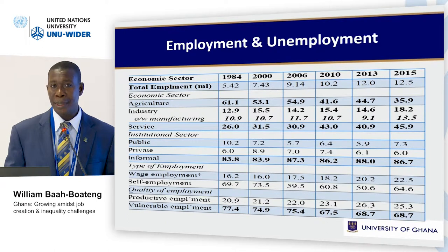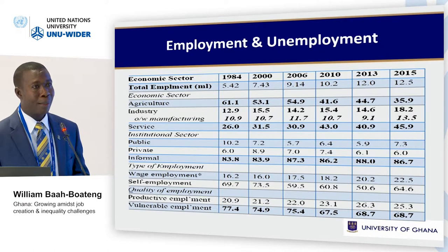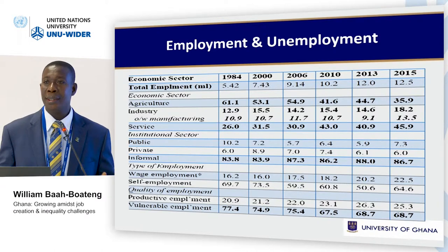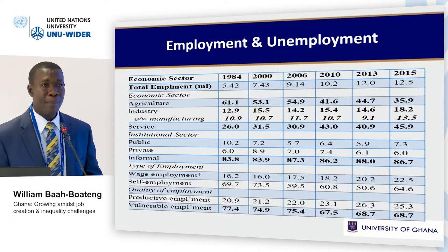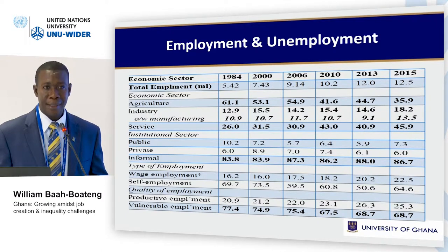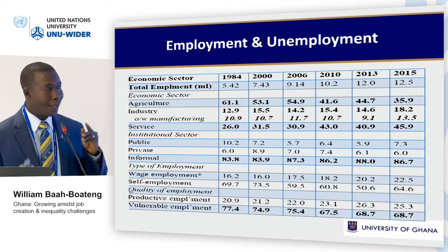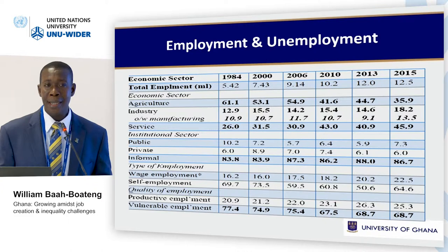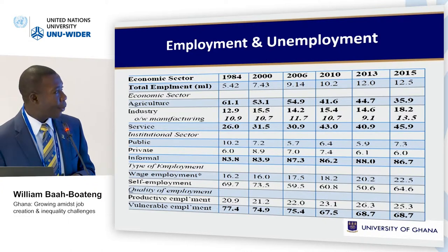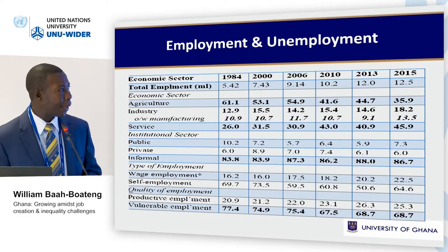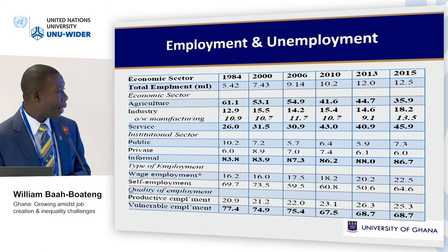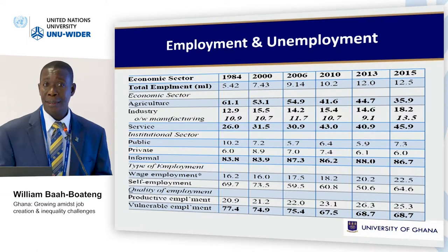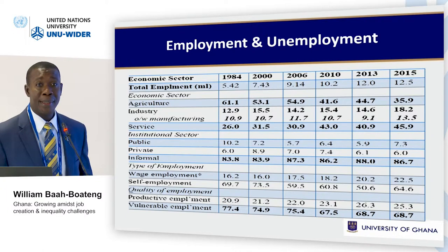Looking at the employment and unemployment situation, employment in terms of sectoral distribution mirrors the changing trend in the structure of the economy. Services now account for the largest share — about 46 percent — followed by agriculture, but from 1984 it used to be agriculture as the dominant source of employment. In terms of quality of employment, informality is quite pervasive and vulnerable employment is high — more than two-thirds of working people are in vulnerable employment, while productive employment is just about a quarter.